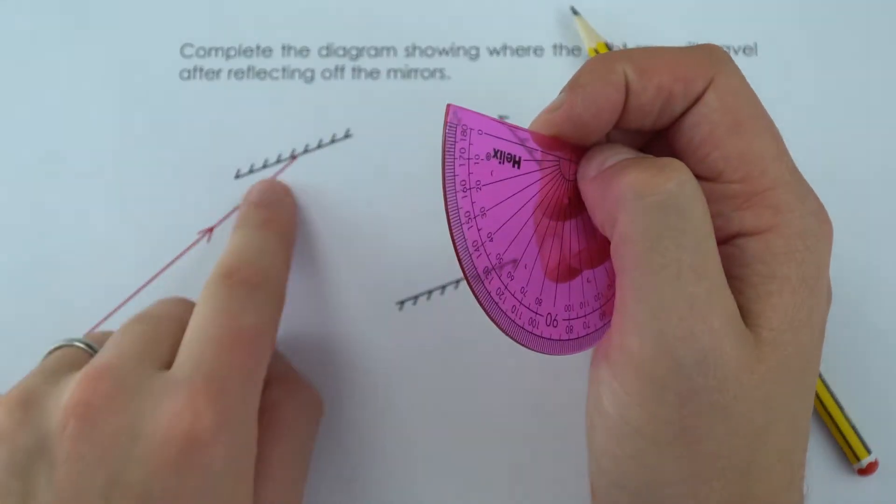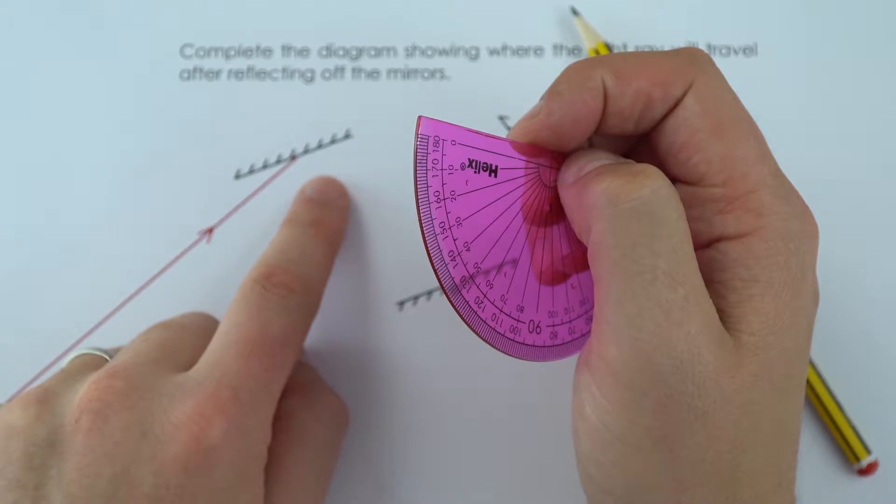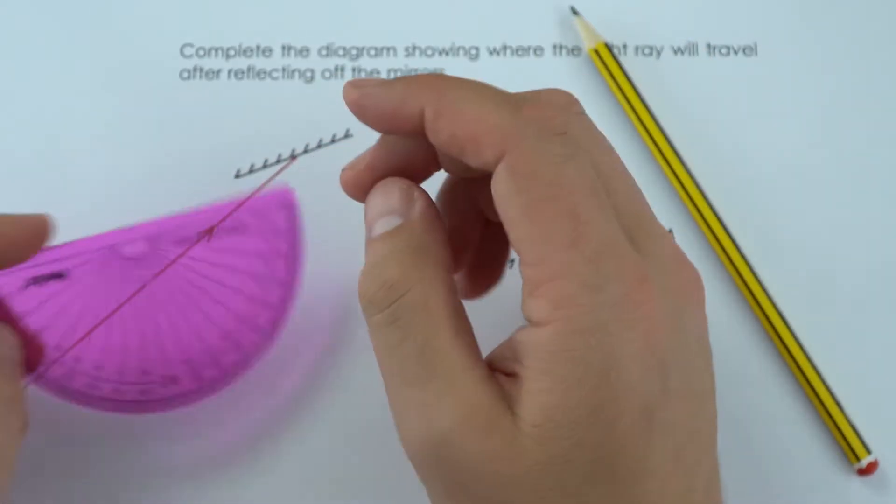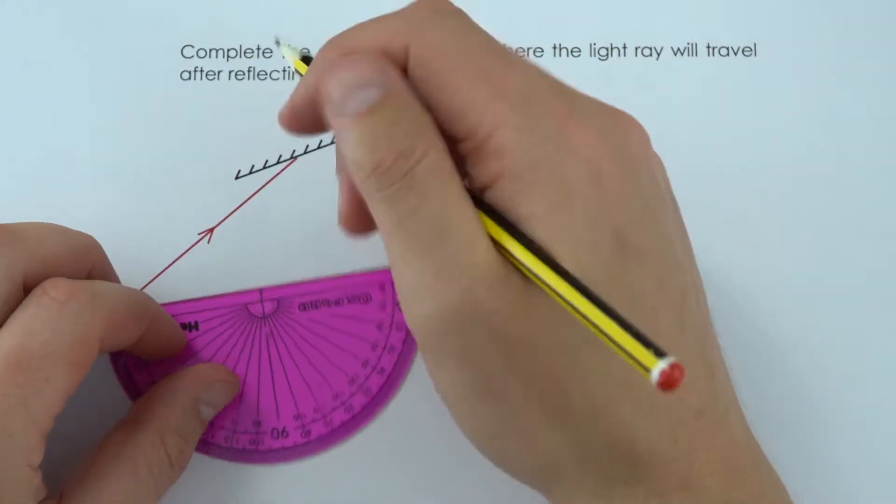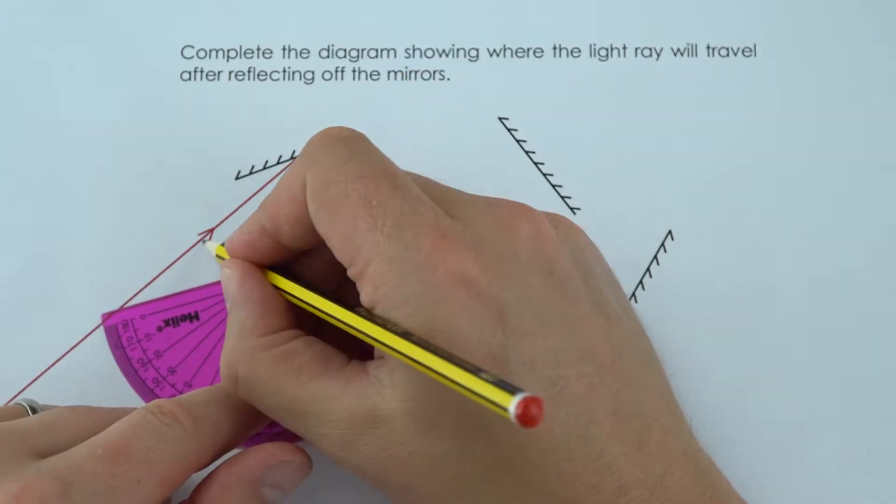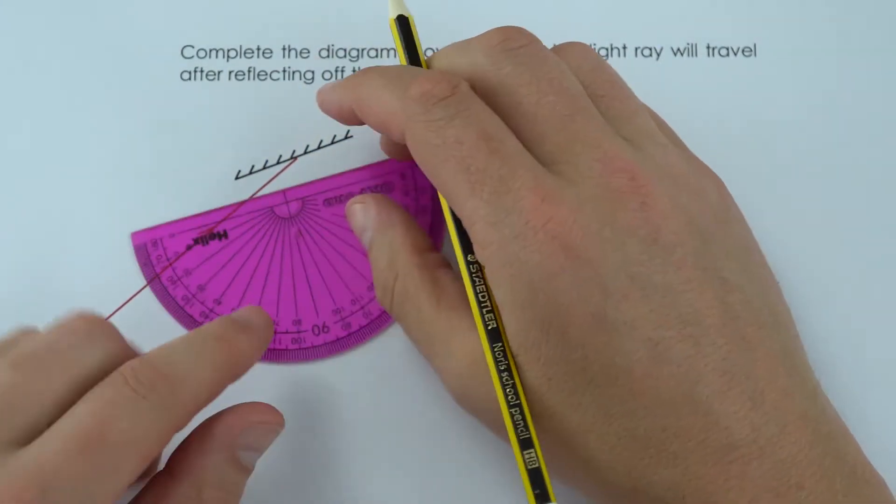So what we know with reflection is that the angle of incidence is equal to the angle of reflection. And to work this out what I'm going to be doing is just measuring in this case the angle between the ray of light coming in, which is what this represents, and the mirror.